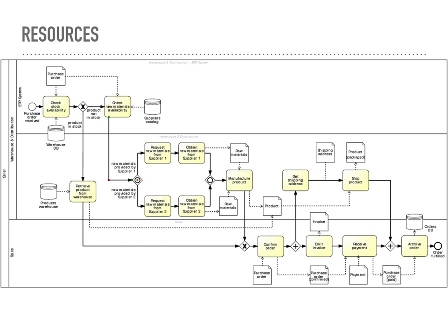In BPMN, active resources and passive resources represent different types of participants or entities involved in the business process. Active resources, also known as human resources or performers, represent individuals or roles that actively perform tasks or activities within a business process. They typically correspond to human participants, such as employees, system users, or external users, who actively contribute to the execution of process activities. Active resources are capable of initiating actions, making decisions, and interacting with the process. They have control over the flow of the process and can directly influence its outcome.